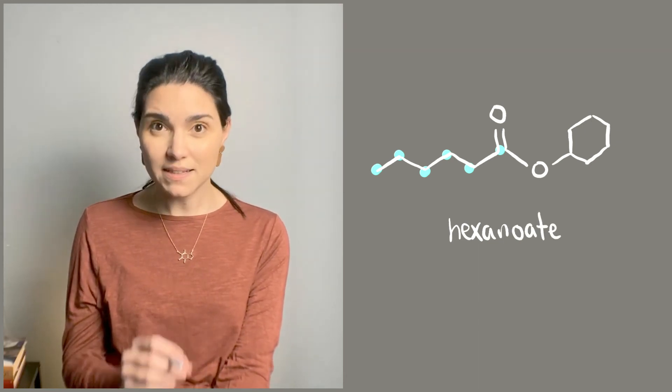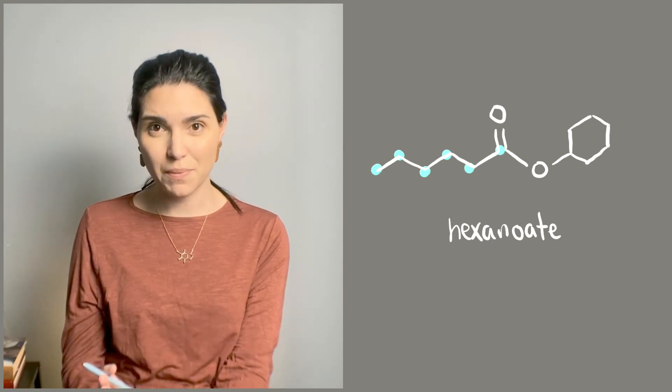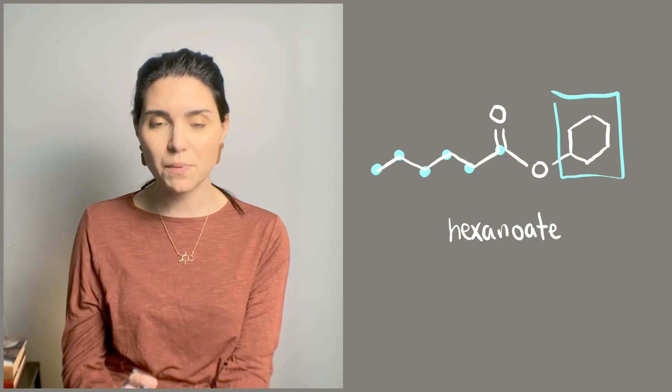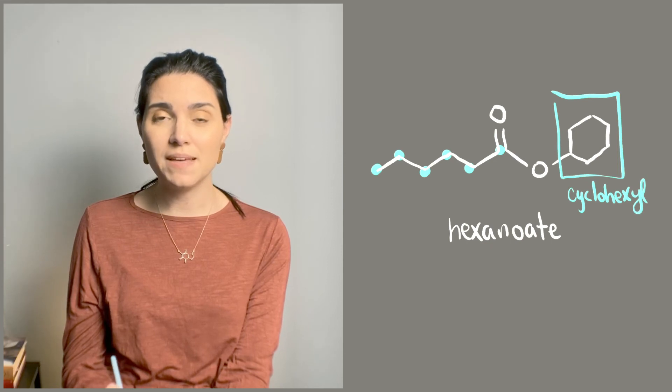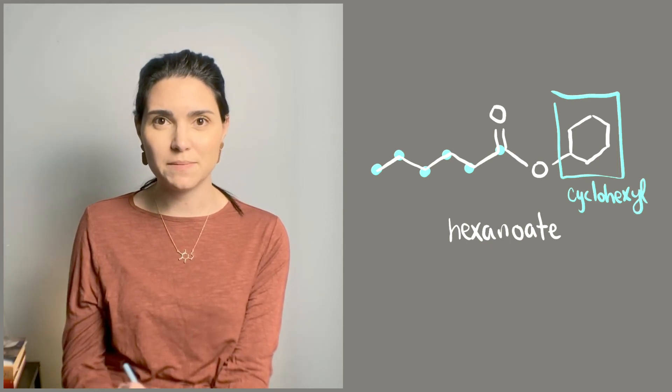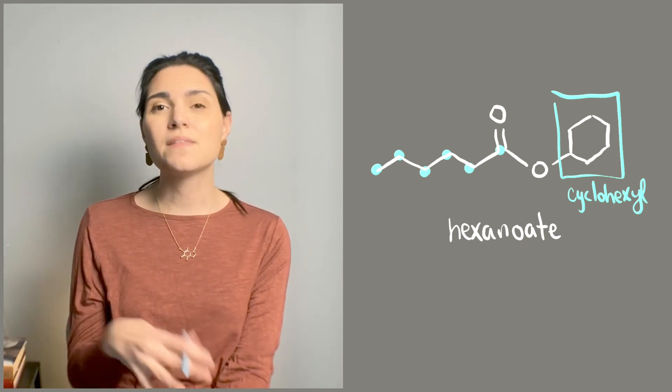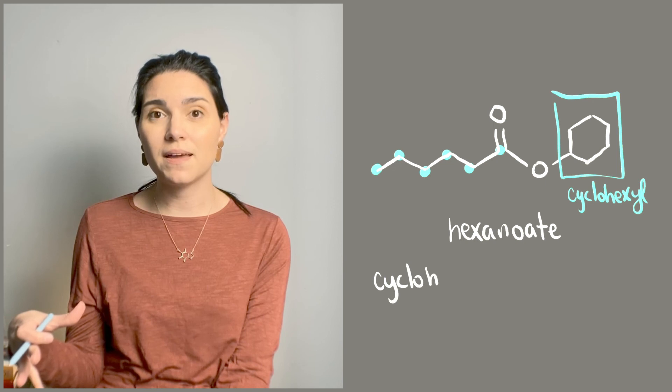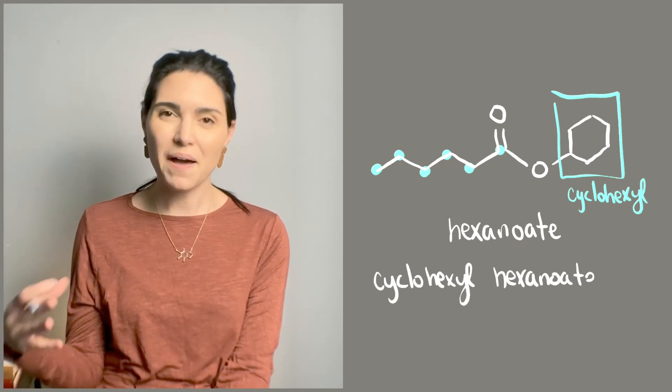Now that we have hexanoate, we can look at the other side, what's connected to the oxygen part of the ester. So on the oxygen part of the ester, we have a cyclohexane. So we have to name that as a substituent. So we drop the A-N-E and we add Y-L to make it a substituent name. So it goes from cyclohexane to cyclohexyl. We're going to put that in the very front of the molecule with a space after it. So we get cyclohexyl hexanoate.